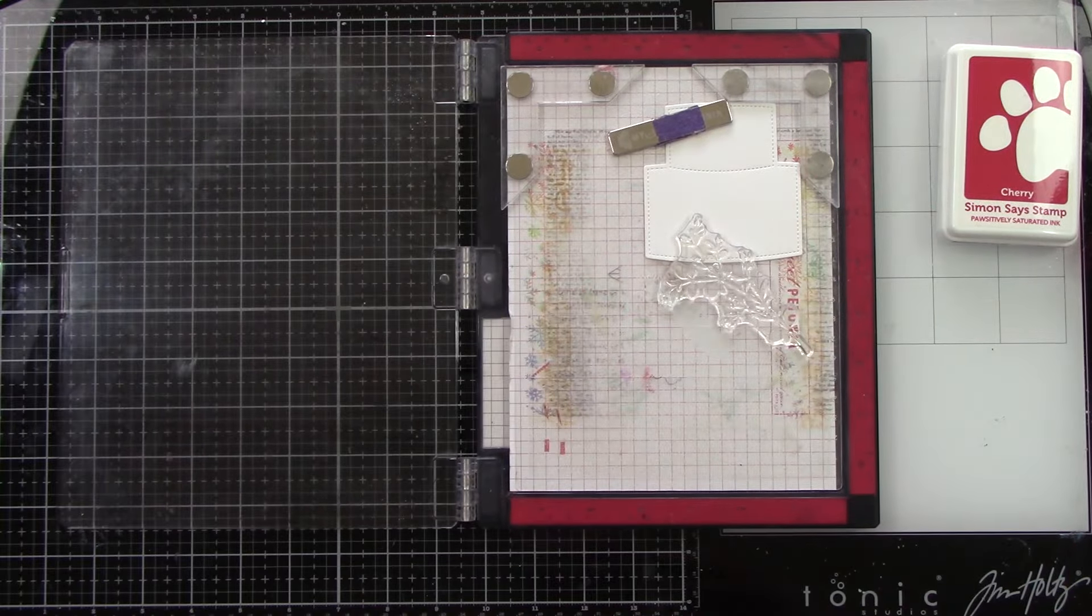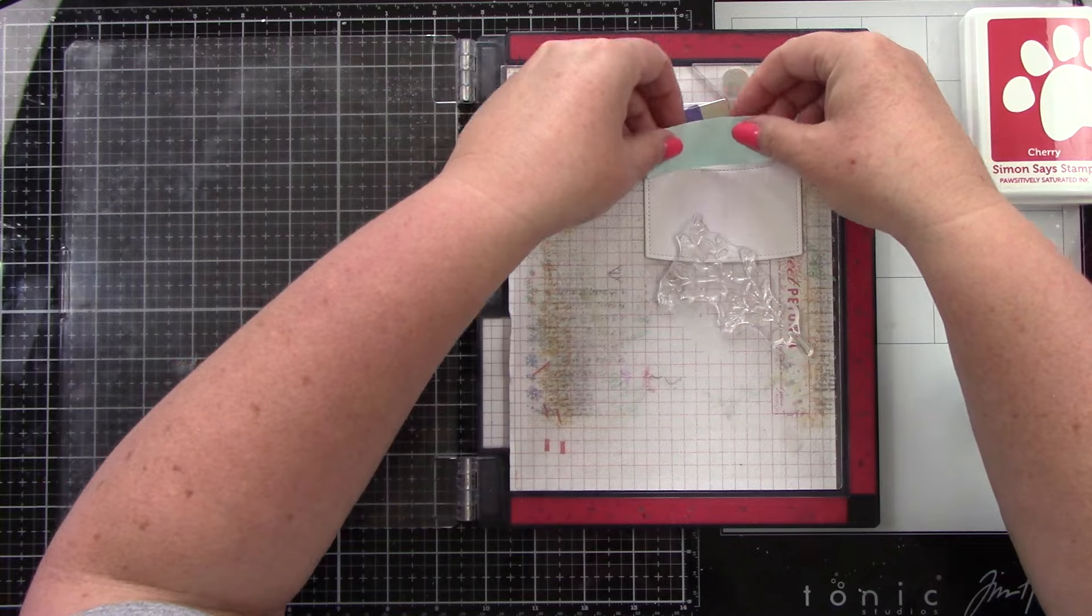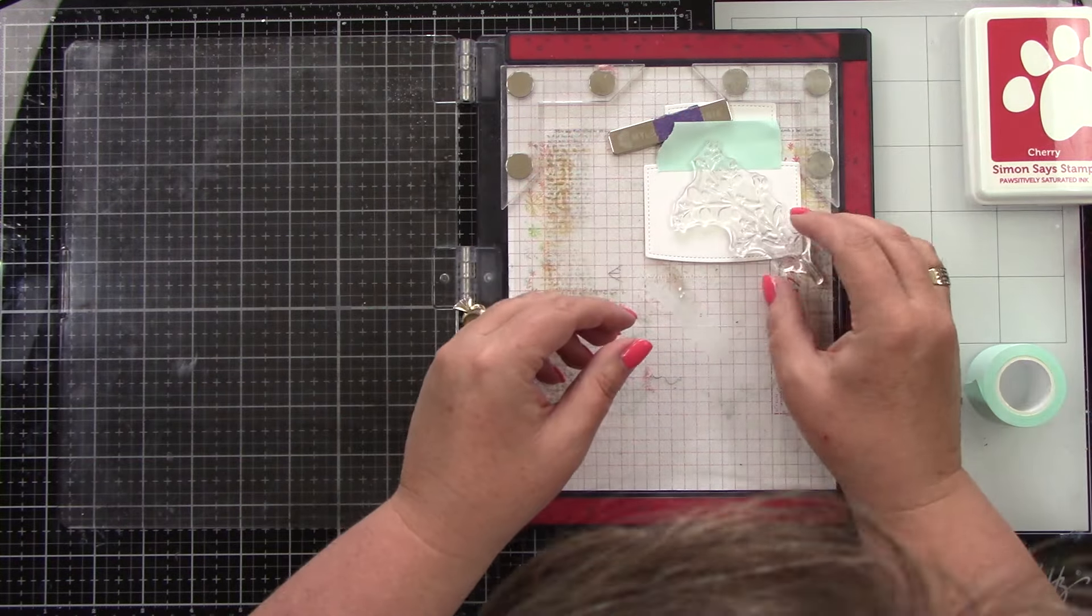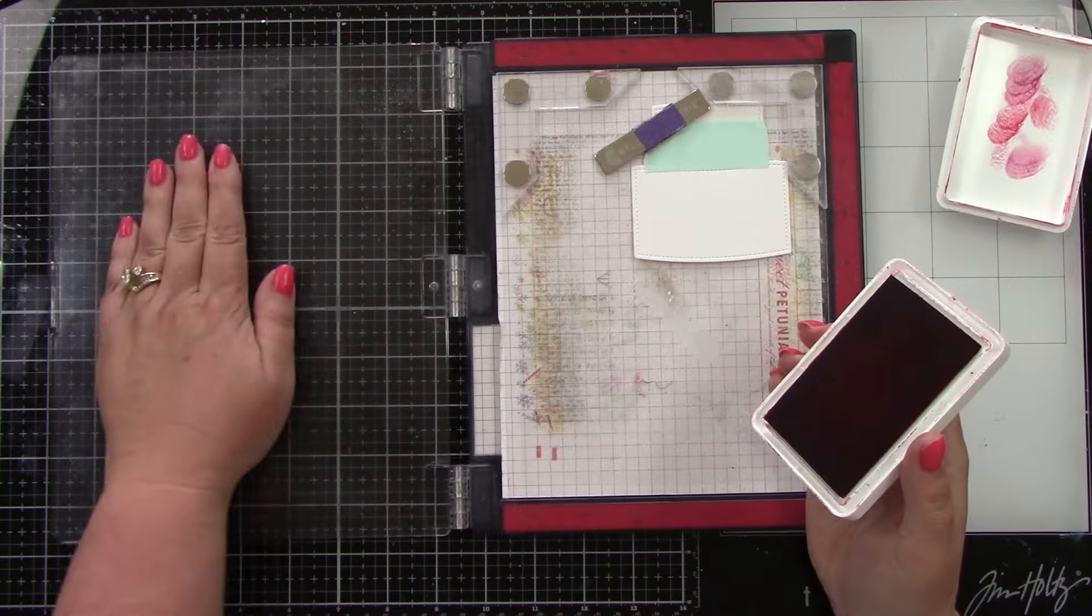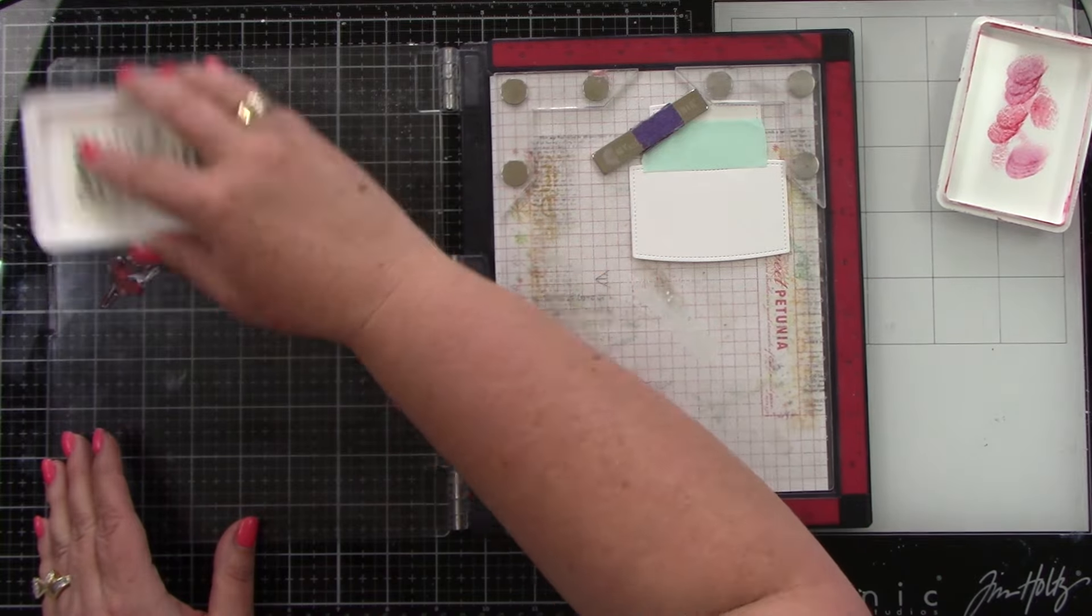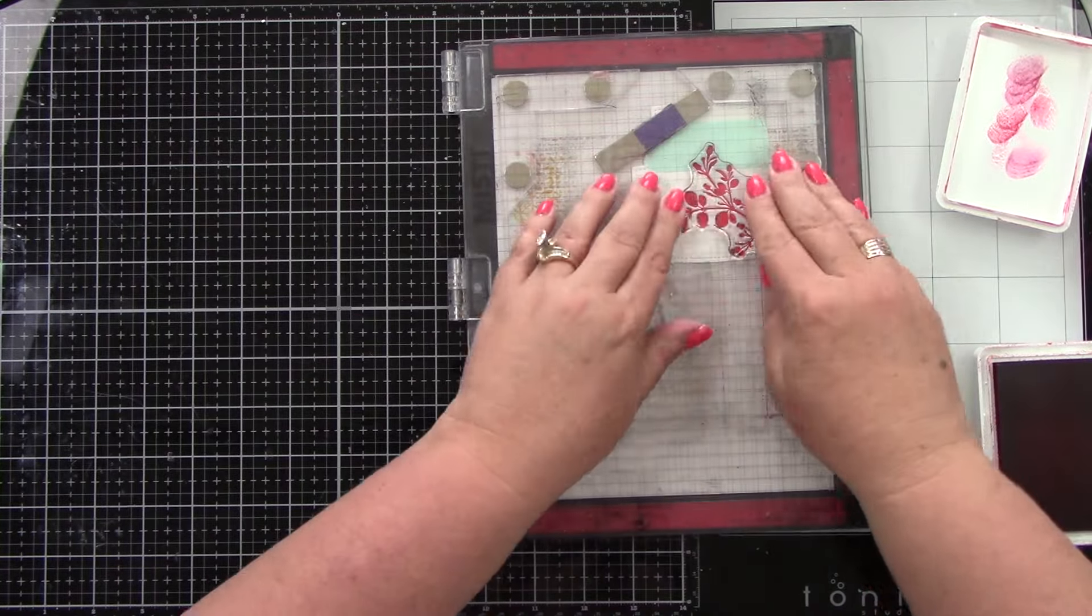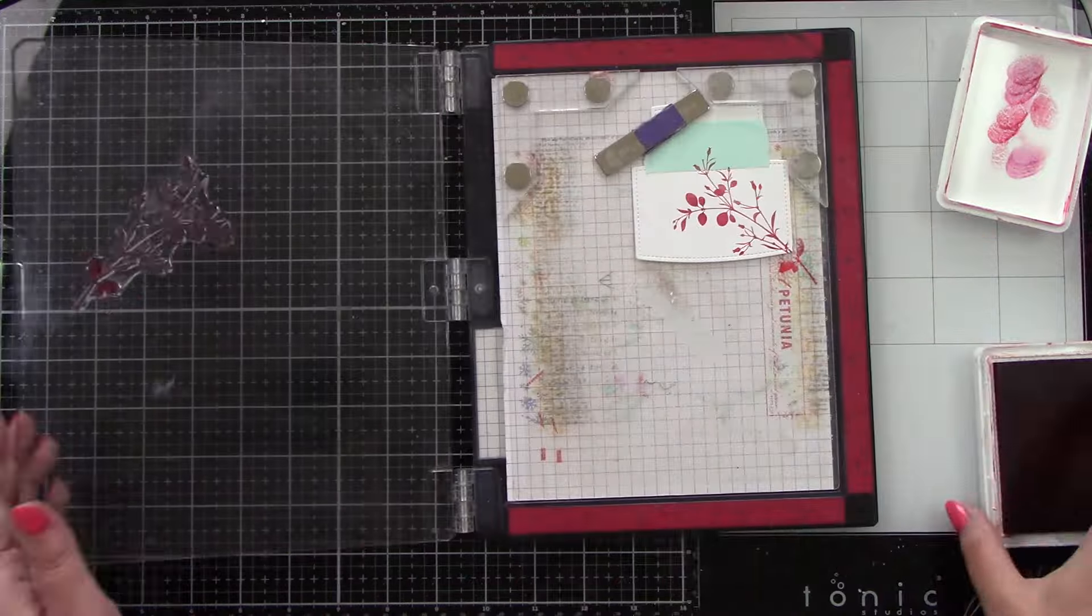So I have the solid piece die cut. Then I am using Gina K's Kindness Silhouette stamp set on this, and I just think it's so pretty. I love these little images, they're so delicate. This is going to be our greenery, so to speak.